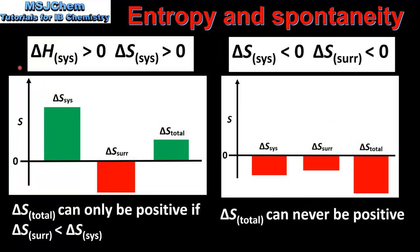For endothermic reactions: if the reaction results in an increase in entropy of the system, the total change in entropy can only be positive if the increase in entropy of the system is large enough to cancel out the decrease in entropy of the surroundings. If both the entropy of the system and the surroundings are negative, the total change in entropy can never be positive, and therefore the process is non-spontaneous.